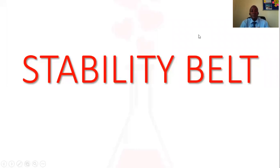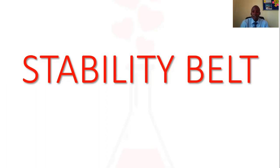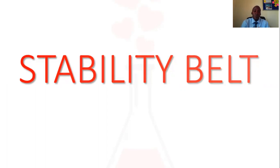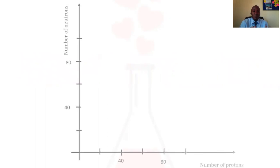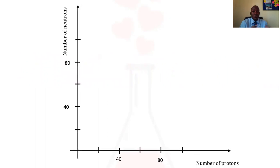Hello friends, in this video we're going to look at the stability belt, which is the continuation of the radioactivity series. Basically, the stability belt is that region where we shall find stable isotopes or stable atoms.